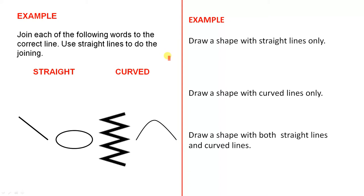Here's another example. Join each of the following words to the correct line. Use straight lines to do the joining — join the straight lines to the word 'straight' and the curved lines to the word 'curved' using straight lines.